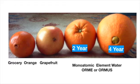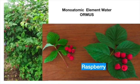Experiments show that watering plants and trees with concentrated monoatomic element water results in significant increase in size and fruit mass. The monoatomic element treated fruits and nuts on the right grow significantly larger oranges, raspberries and walnuts compared to traditionally grown fruit and nuts.